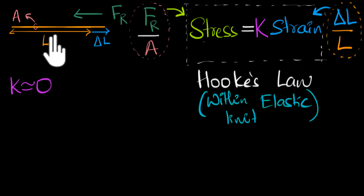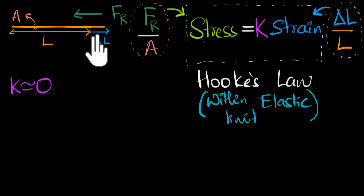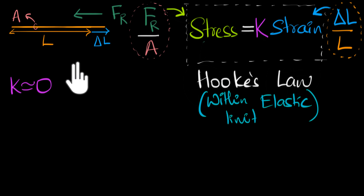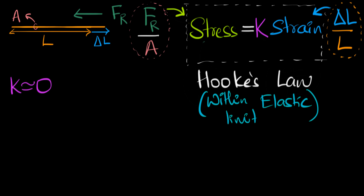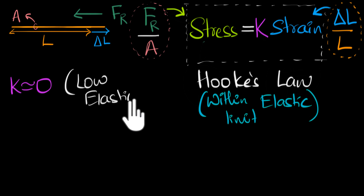If we have a wire with K equal to zero and strain it a little bit but find that the stress is zero, that means if you let go of it, the wire doesn't come back to its original shape. Which means that if K is close to zero, the material has a very low elastic property — low elasticity.